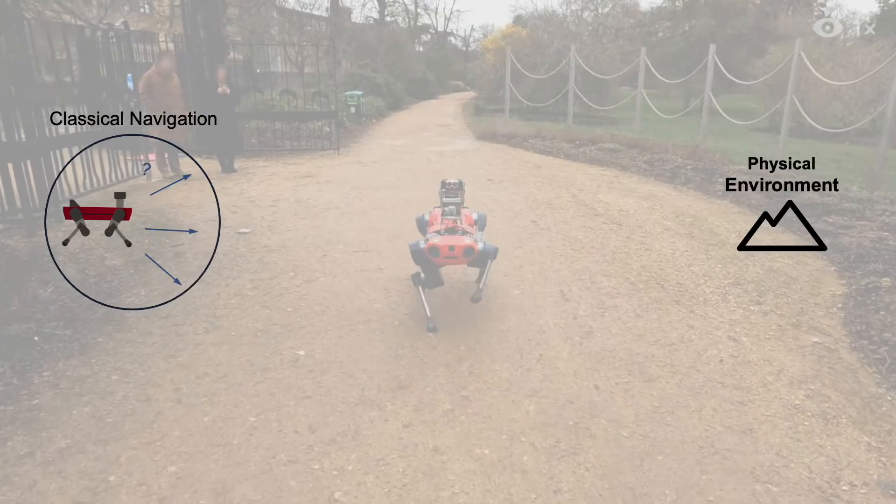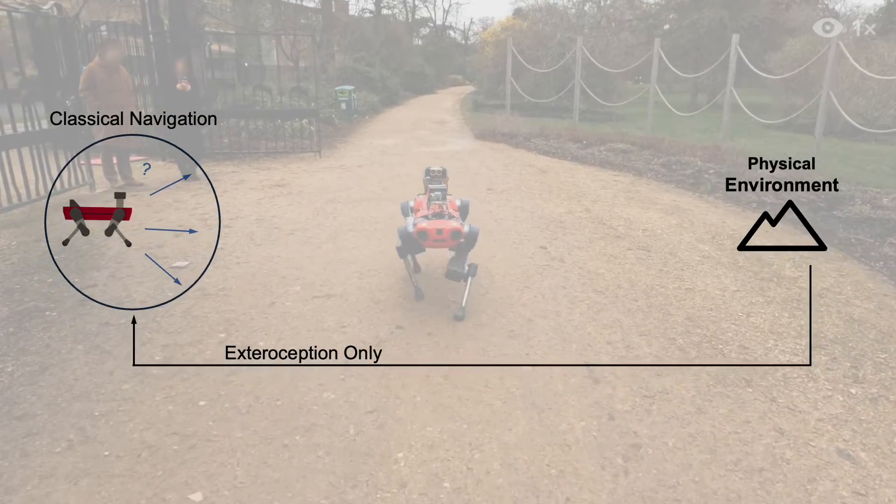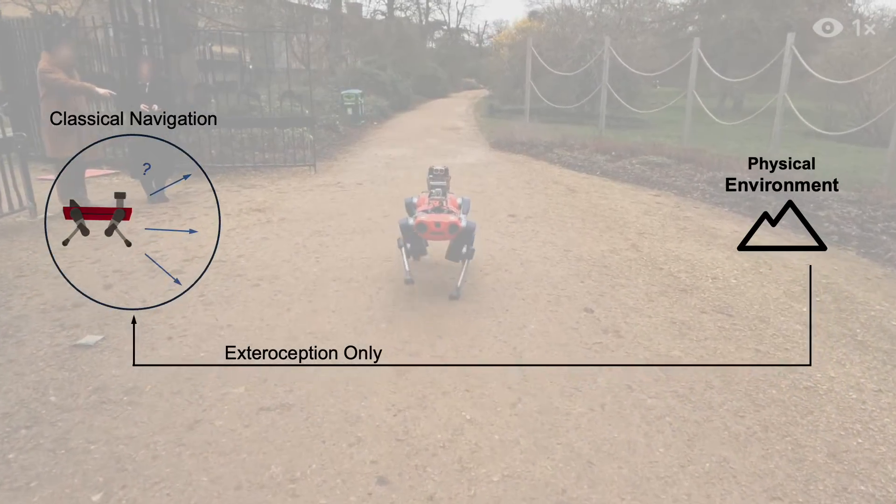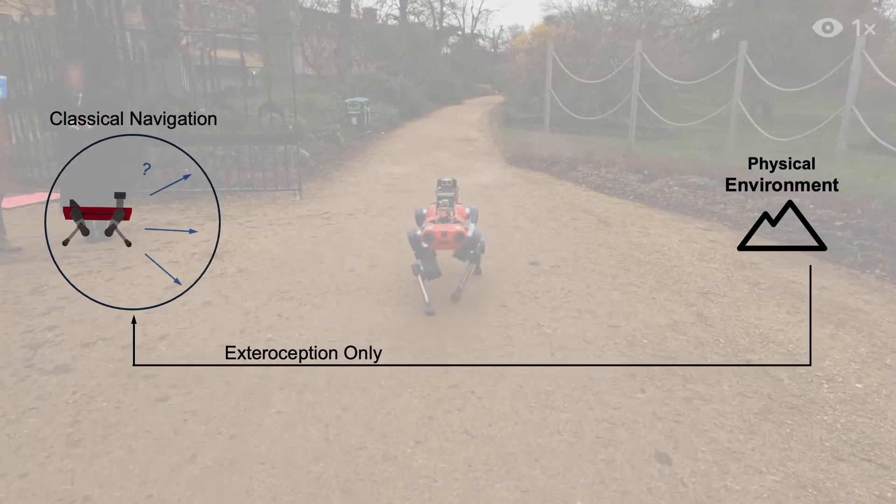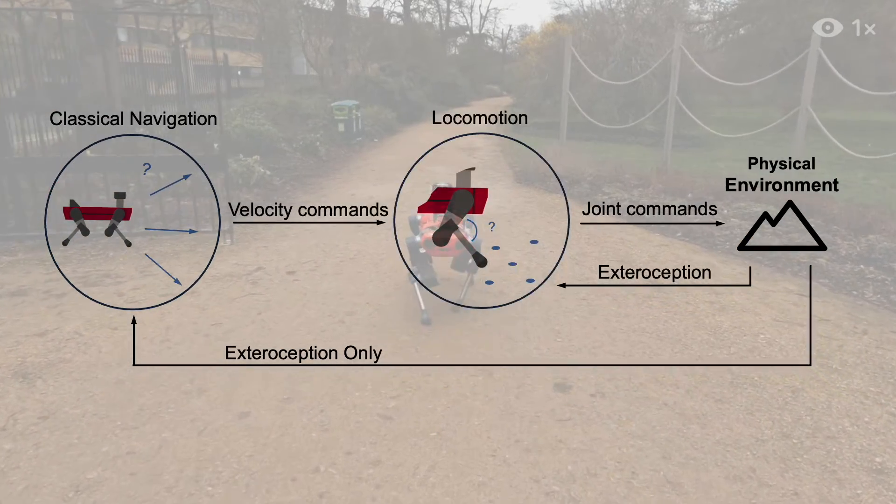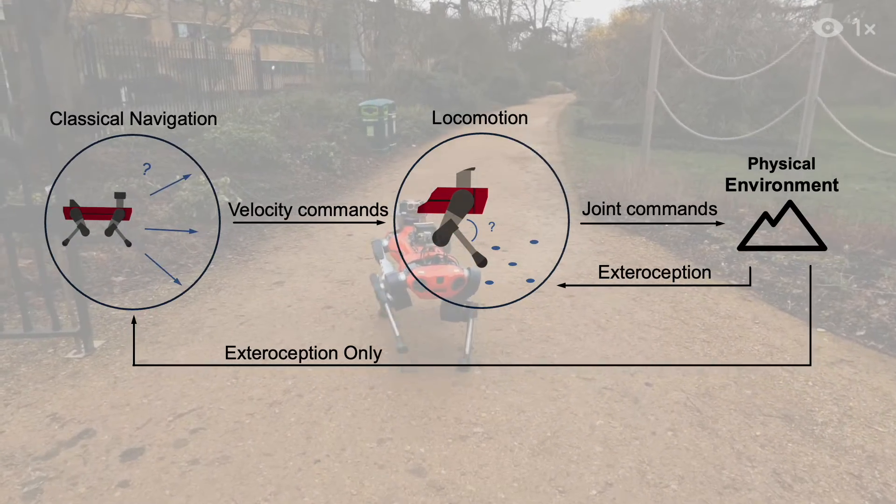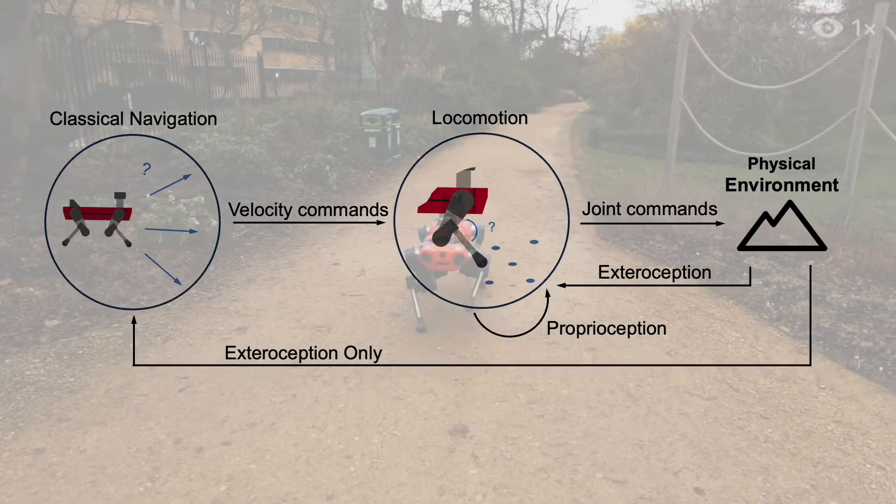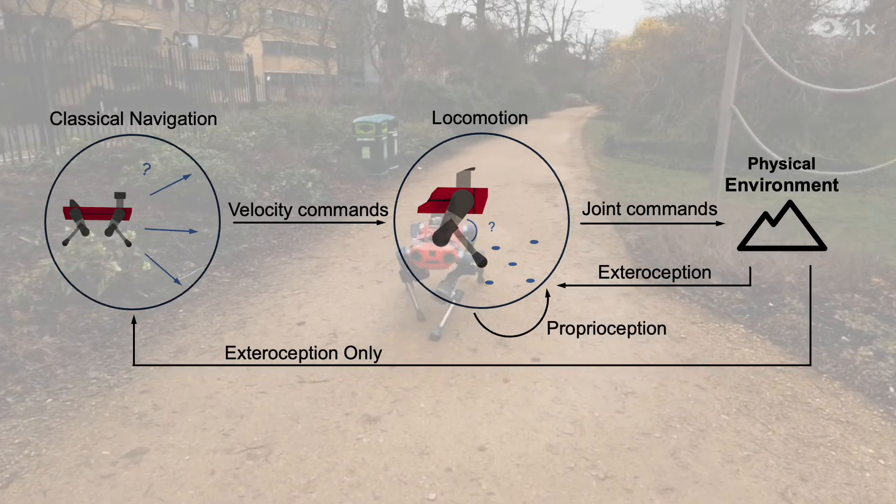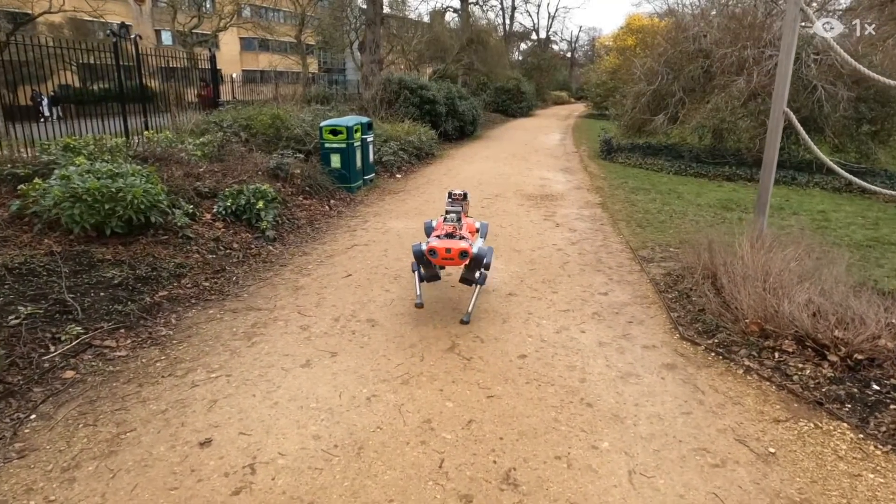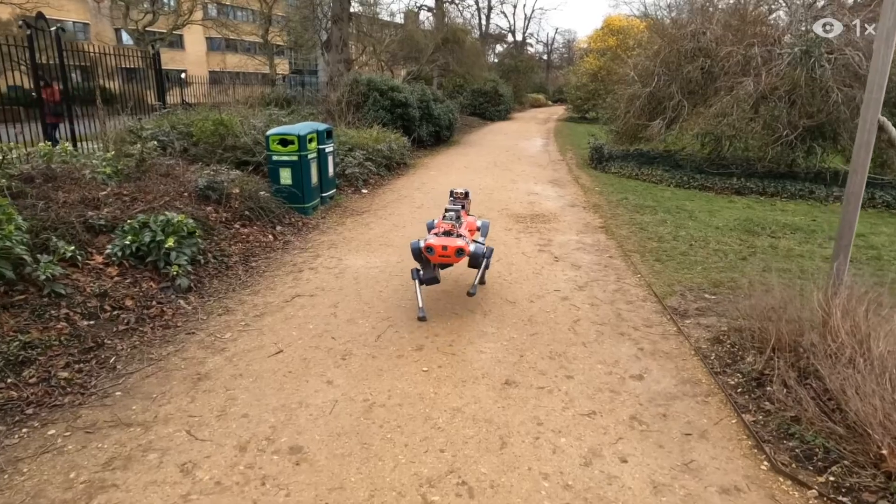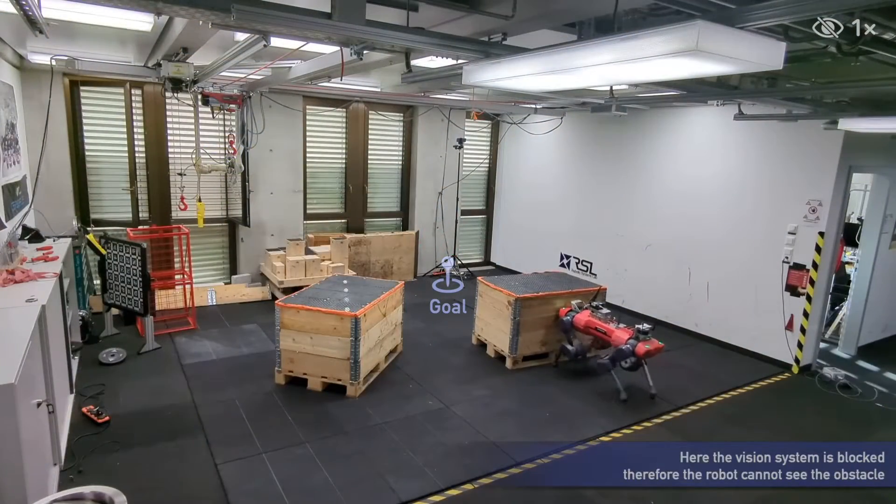Existing navigation methods commonly assess traversability of the environment based on lidar or camera data, the so-called exteroception. A velocity command is produced to the locomotion policy which controls the robot actuators. The proprioceptive information is commonly only available to the locomotion, but not the navigation module. This paradigm works well when the exteroception is reliable but fails when it's corrupted.